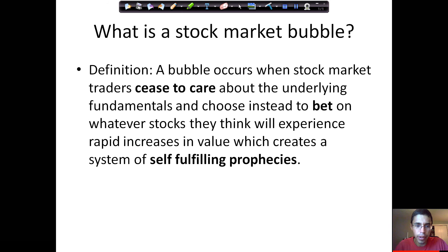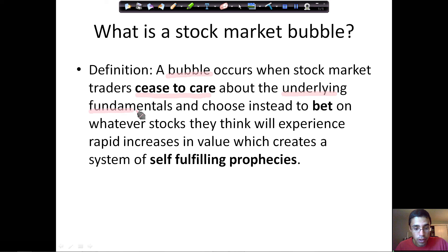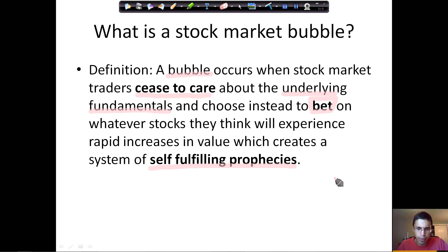What is a stock market bubble? A simple definition I find most useful is this: a bubble occurs when stock market traders — the people engaged in trading stocks on a daily basis — cease to care about the underlying fundamentals. Underlying fundamentals means profitability, or the ability to make profits in the future. A bubble occurs when stock market traders cease to care about those fundamentals and choose instead to bet on whatever stocks they think will experience rapid increases in value, which creates a system of self-fulfilling prophecies. There's a lot packed into this definition.